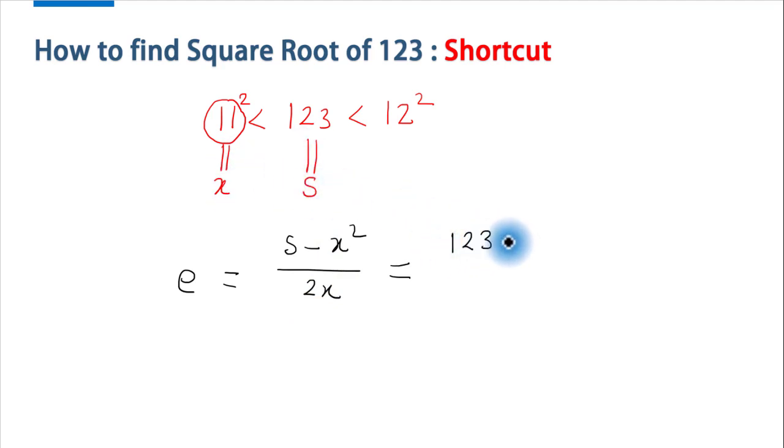123 minus 11 squared upon 2 times 11. Further we can simplify the numerator as 123 minus 121 upon 2 times 11.